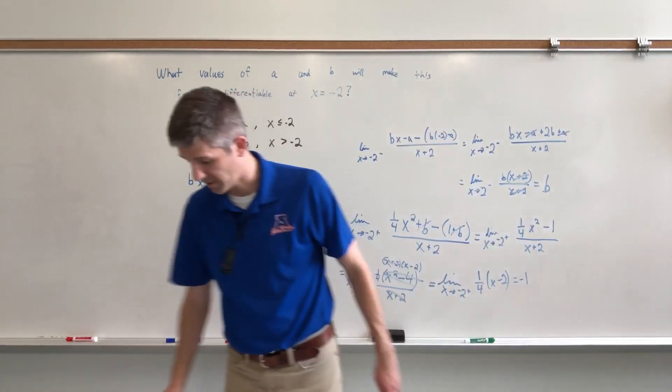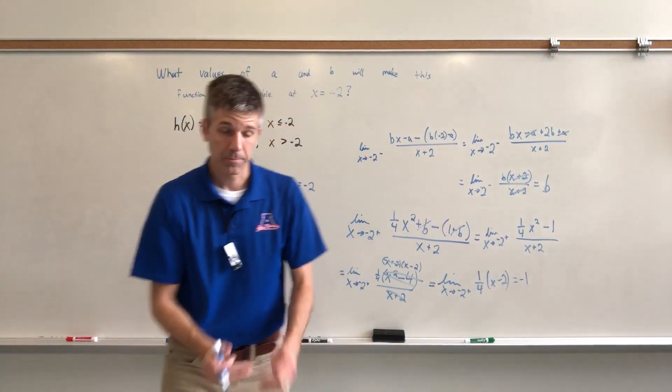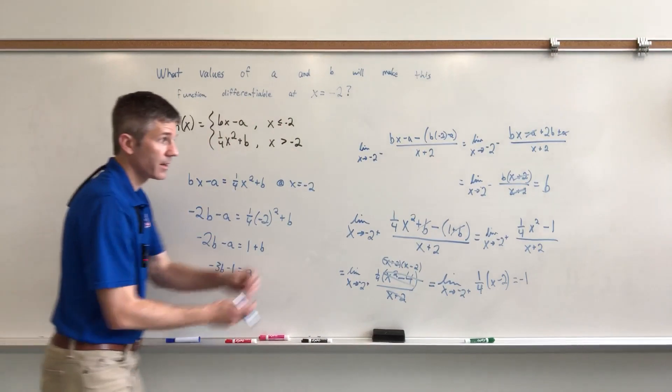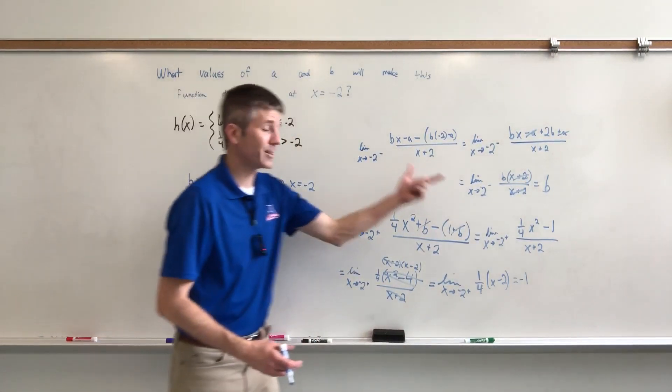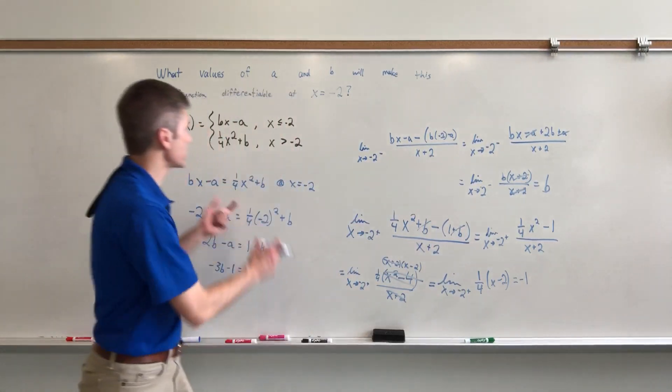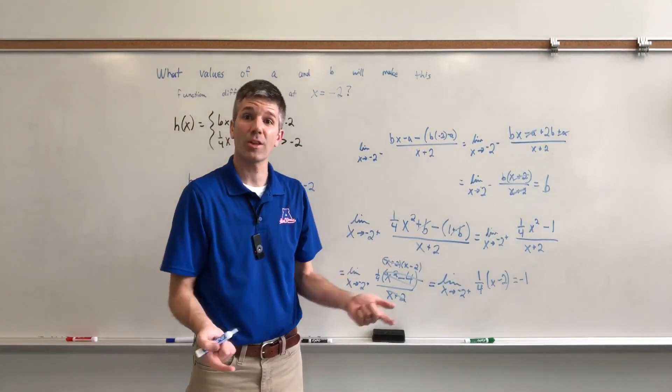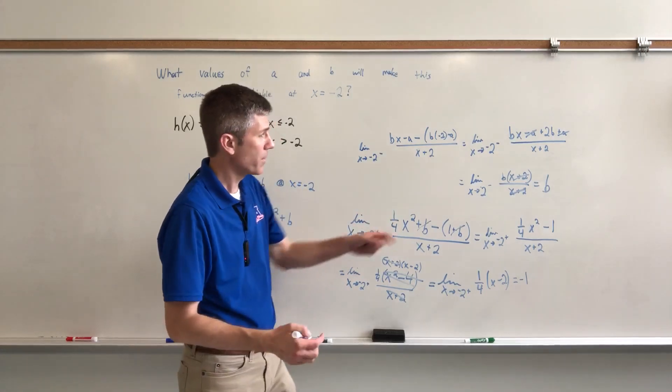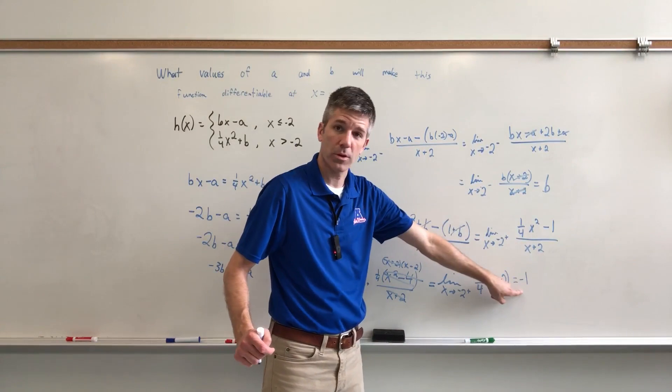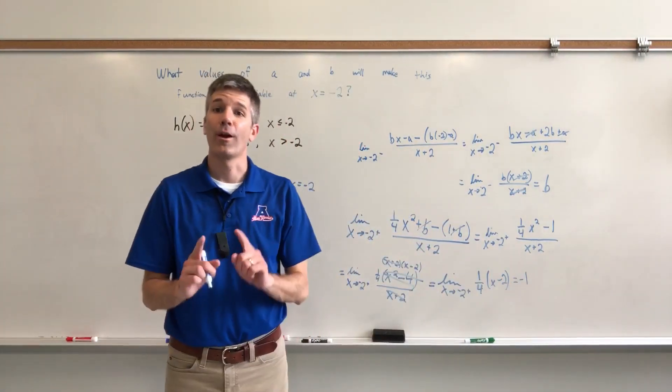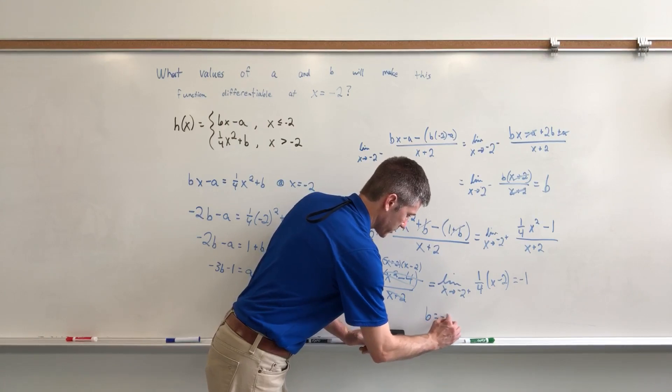Here's the deal. I'm running out of board space. I know you're running out of room on your paper. Remember, I want differentiability. Continuity, differentiability. The two sides equal when you plug in a negative 2. The two sides have the same slope as you approach negative 2. One side approaches a slope of B. The other side approaches a slope of negative 1. Therefore, B equals negative 1.